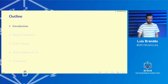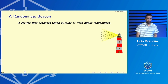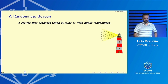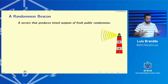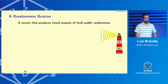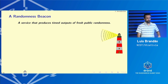Let me start with an introduction. What NIST sees as a randomness beacon, since around 2011 as it tried to define what it wanted to promote as public randomness for public good, is that it should be a service that produces timed outputs — so they're well defined in time — of fresh public randomness.